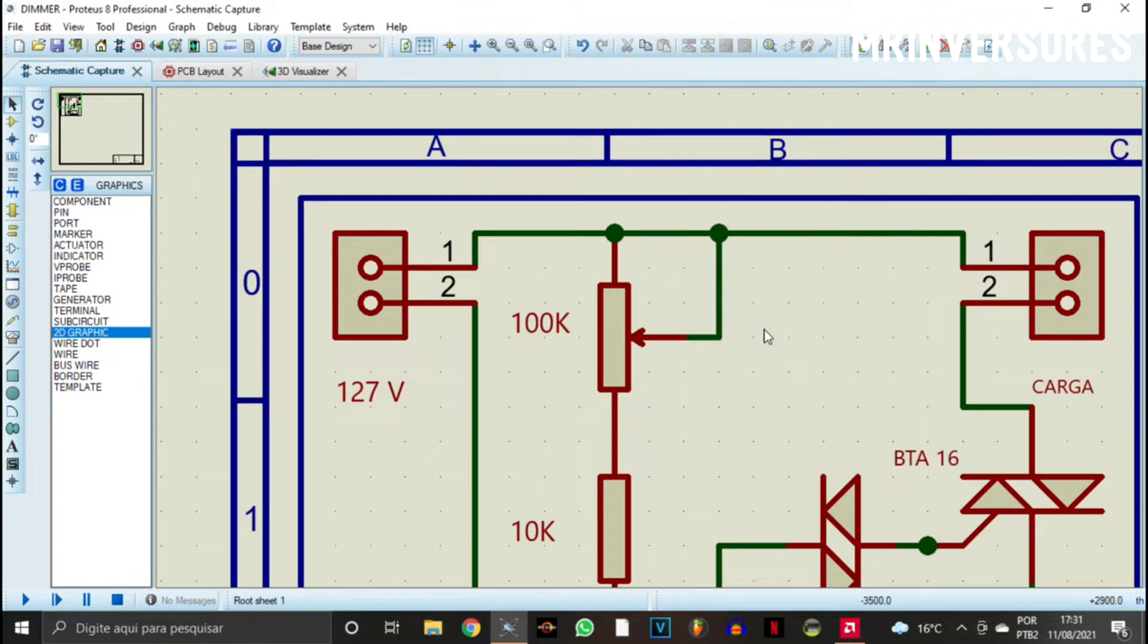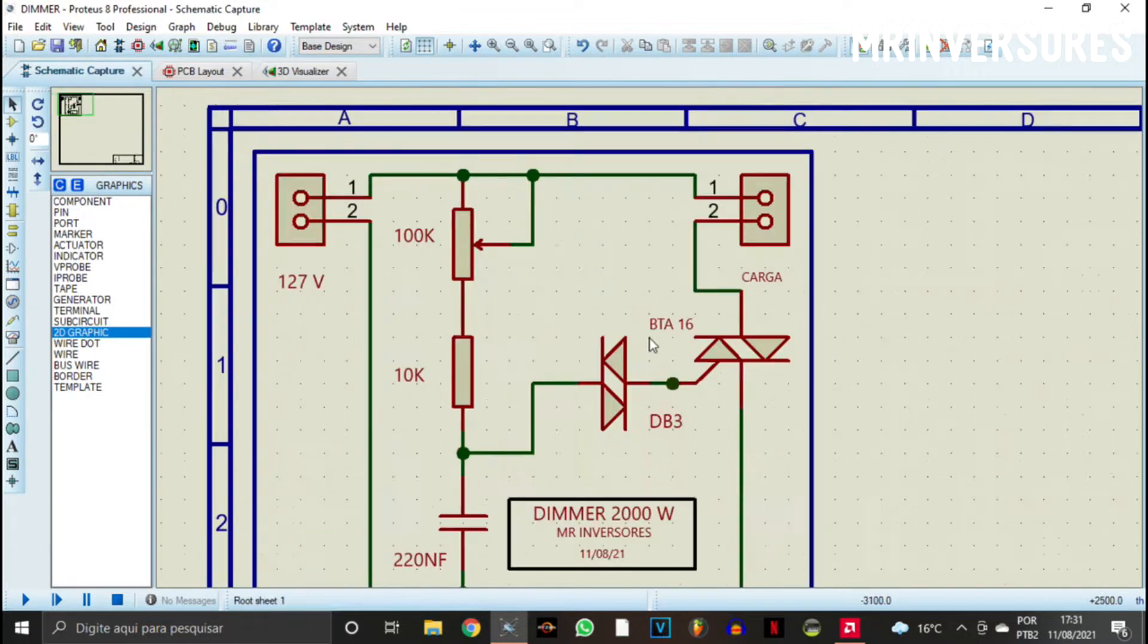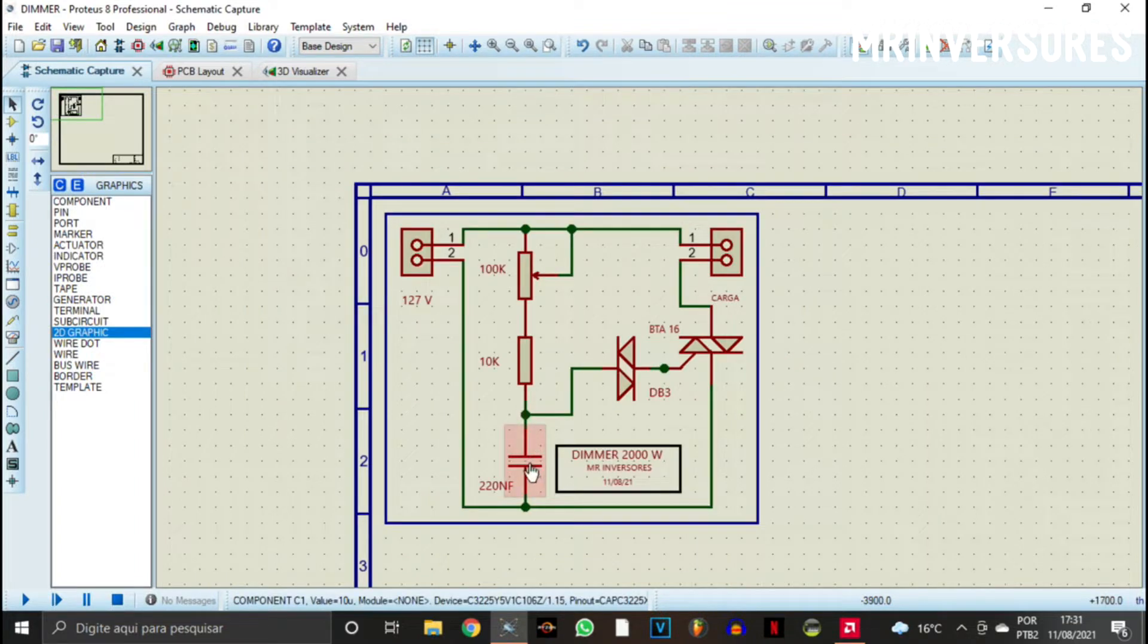As you increase the resistance, this capacitor here takes longer to charge and discharge. So what happens is the triac works by decreasing the output voltage, which is right. When you lower the resistance on the potentiometer, more current will pass here, so it will charge and discharge the capacitor faster, and then it will increase the voltage here on the triac.